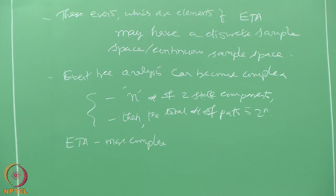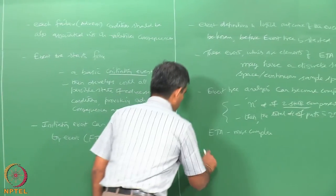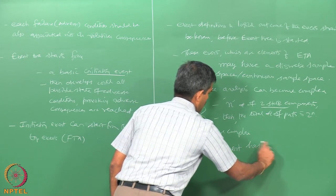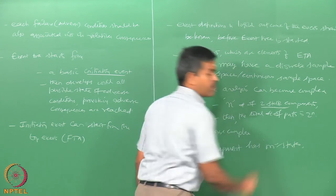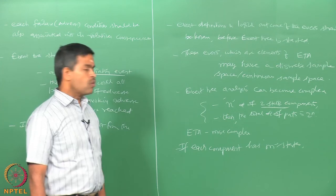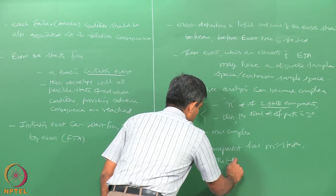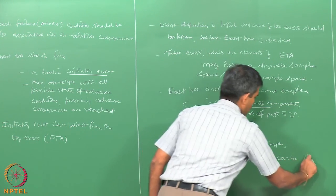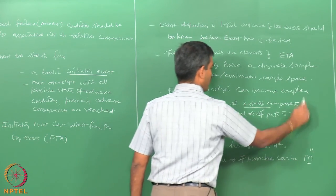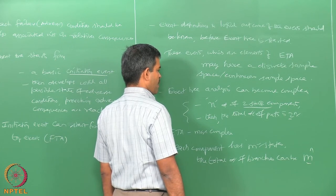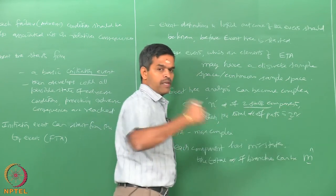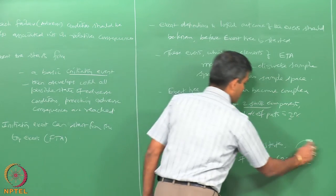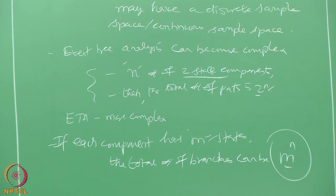If each component has m states — we were talking only two states before — then the total number of branches can be m^n. Because if there are two states it is 2^n, where n is the number of components. If there are m states, it can be m^n, which will make the analysis further more complicated.